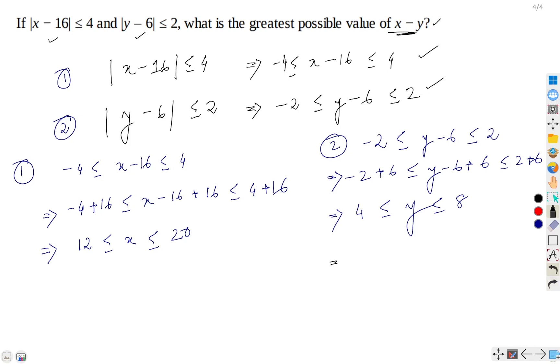That is, if we are multiplying both sides with -1, then this symbol will get reversed. Less than equal will be greater than equal. Similarly, here, less than equal will be greater than equal. -4 ≥ -y ≥ -8.